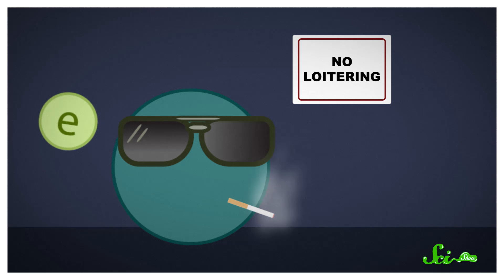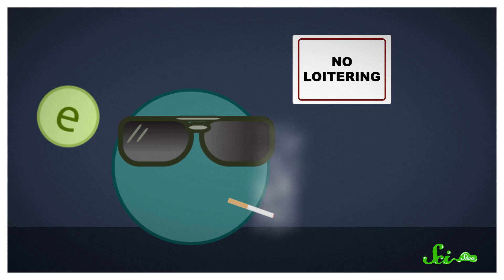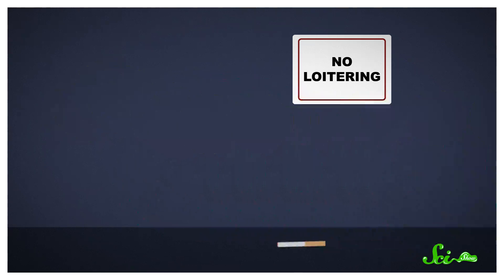Electrons love traveling in pairs and are the most stable that way. But free radicals have unpaired electrons. Because of their instability, free radicals are on the hunt for more electrons, and will take them from things like DNA, proteins, and fats, reacting with those molecules and damaging them in the process.